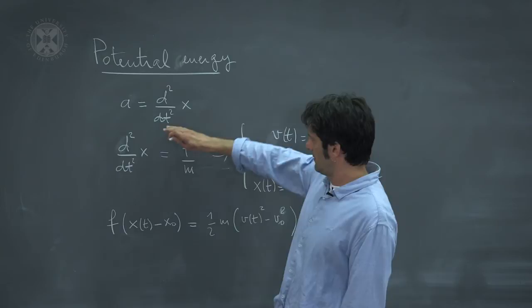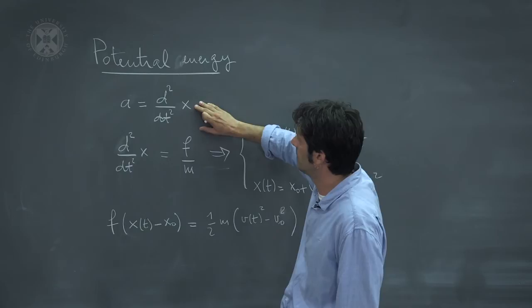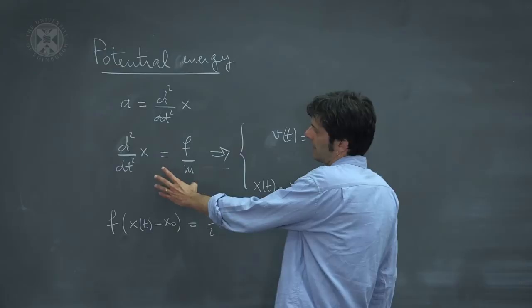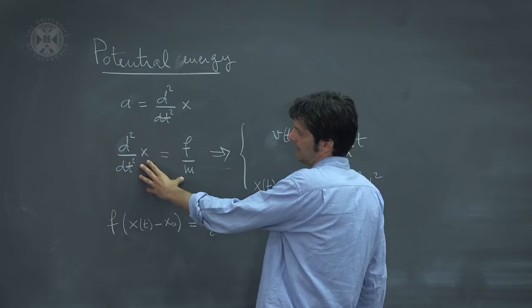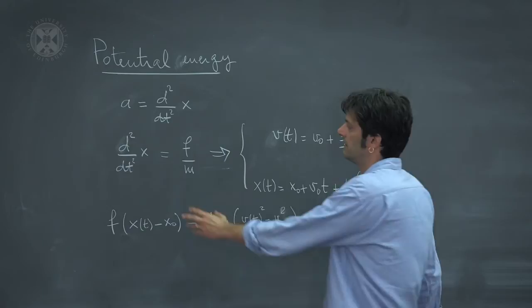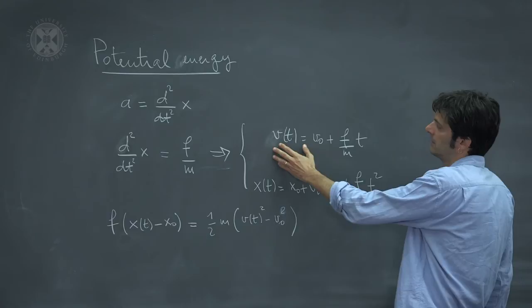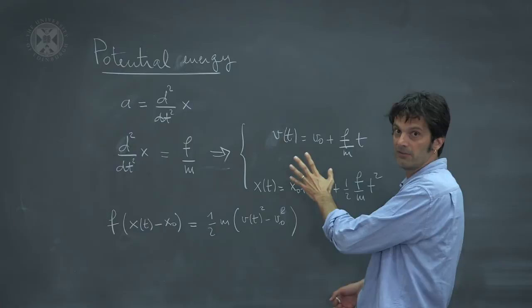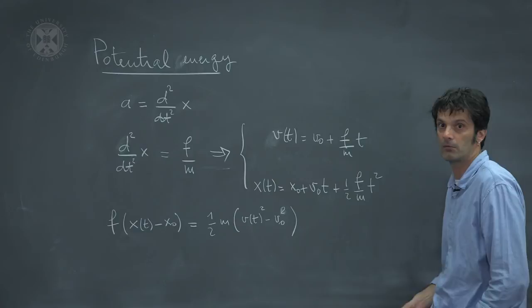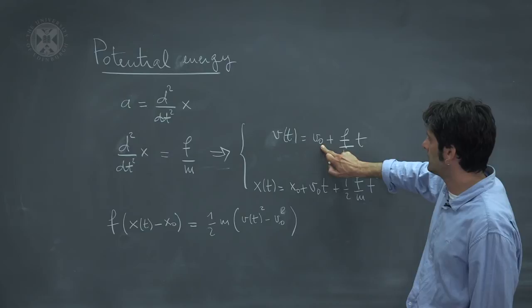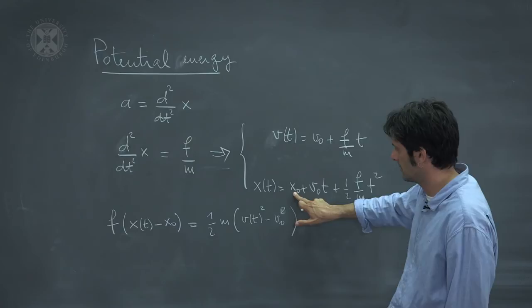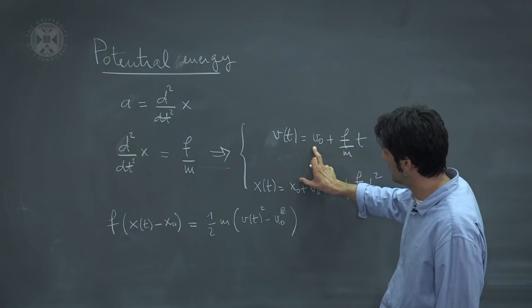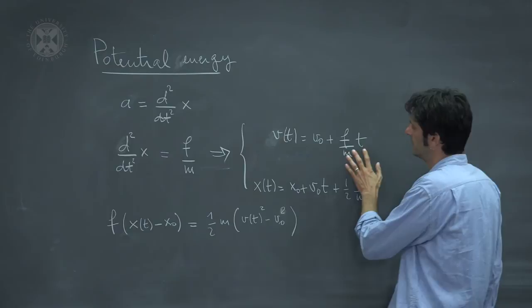The acceleration is the second derivative of the position with respect to time, so we can rewrite Newton's law as a differential equation for x. Because F is constant, this is a simple equation you can solve in a straightforward way, immediately finding the velocity and position as a function of time. The result will depend on the velocity at time zero — v0 — and the position at time zero — x0. Once these two quantities are known, you can compute the velocity and position for any time t.